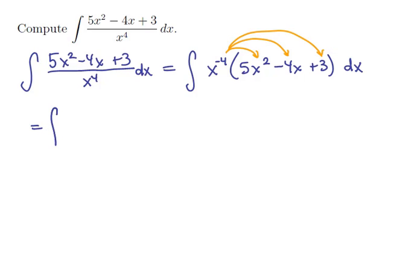Distributing that x to the negative 4 in, we're going to have 5 times x to the negative 2 minus 4 times x to the negative 3 plus 3 times x to the negative 4 dx. That's our new antiderivative.